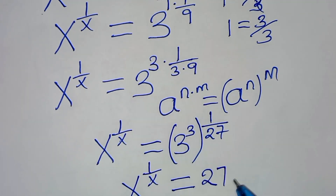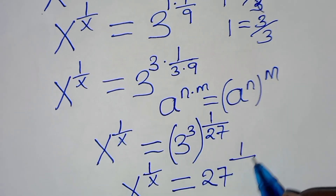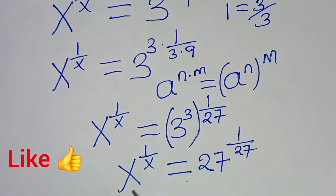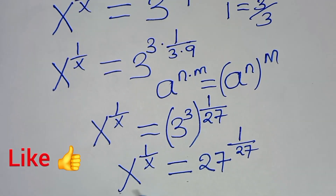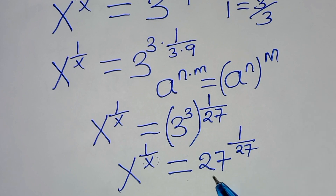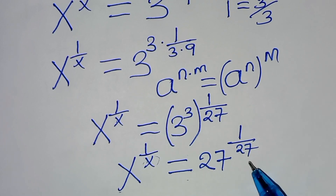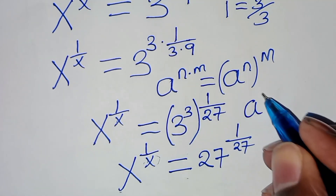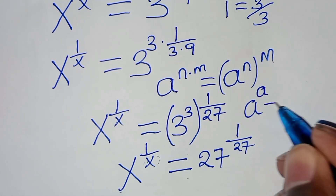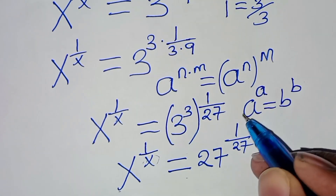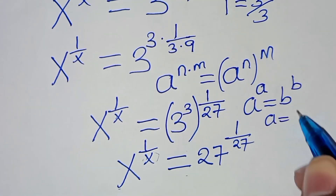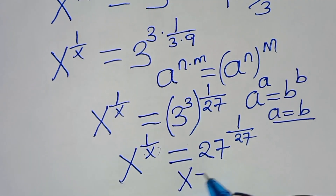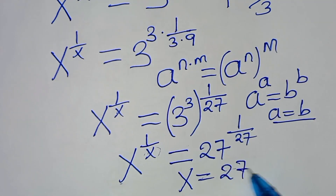So we have x to the power of 1 over x equal to 3 to the power of 3, which is 27, raised to the power of 1 over 27. Now on the left hand side, the base and the exponent are the same. The same case on the right hand side — the base and exponent are the same. Using the property that if a to the power of a equals b to the power of b, then a equals b, therefore x is equal to 27.